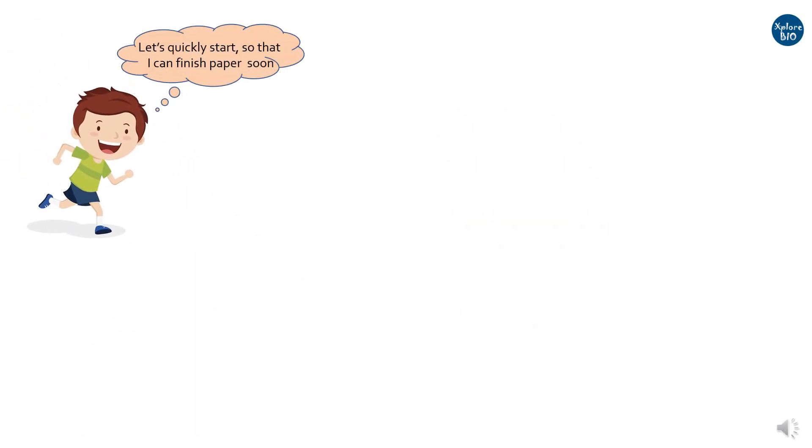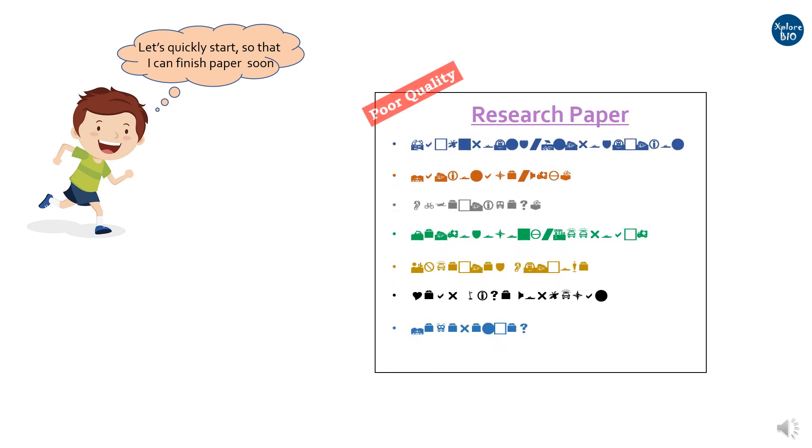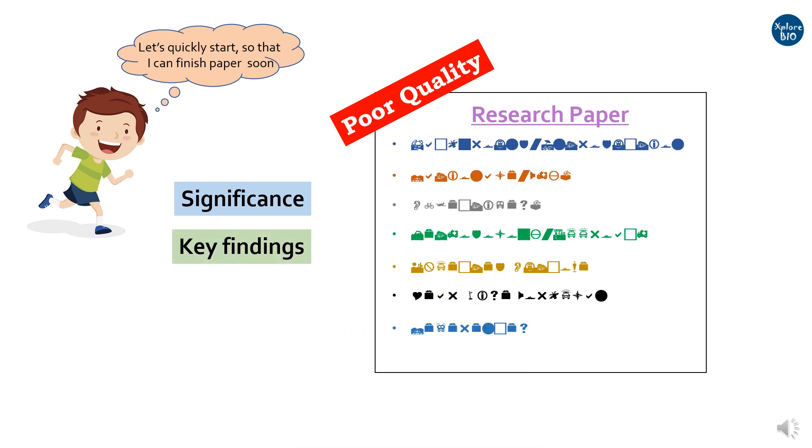What most students do is they directly jump to start writing a research paper without even knowing or understanding their data. This way, they do finish the paper but it lacks several things that are key for a quality paper. By quality, what I mean is the readers may not understand why the research was done, what was its significance, what were the major findings.